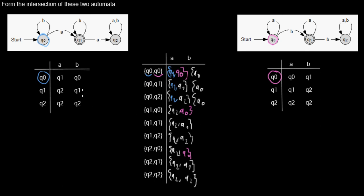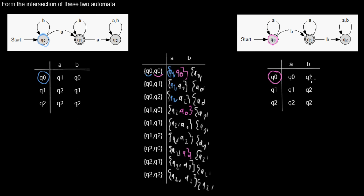In Q1 with a B in the left automaton we stay in Q1. In Q2 with a B we stay in Q2. Now for the right automaton: if we are in Q0 and read a B, we move to Q1. From Q1 with a B, we move to Q2. From Q2 with a B, we stay in Q2.